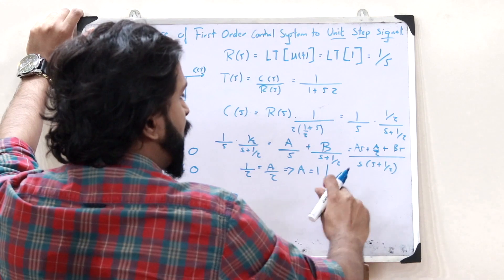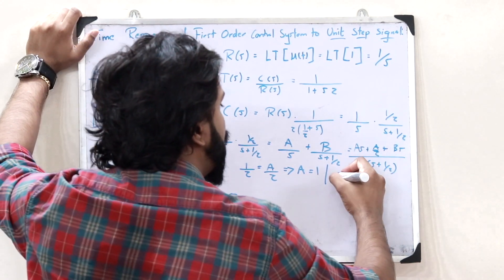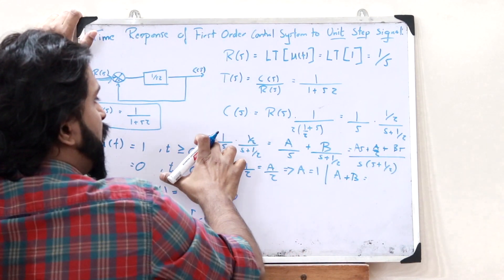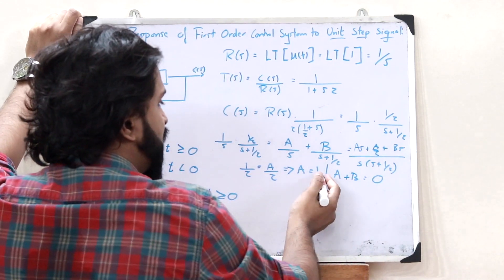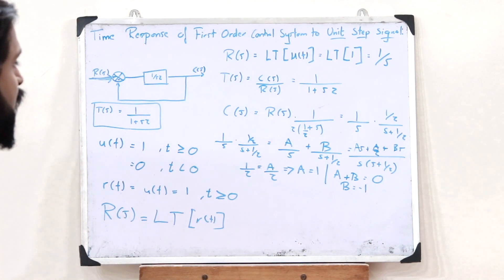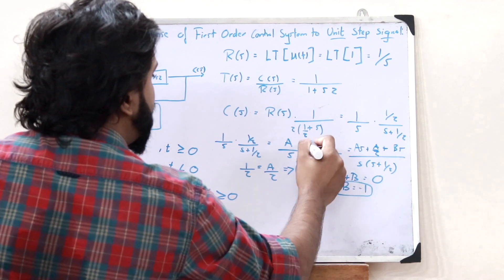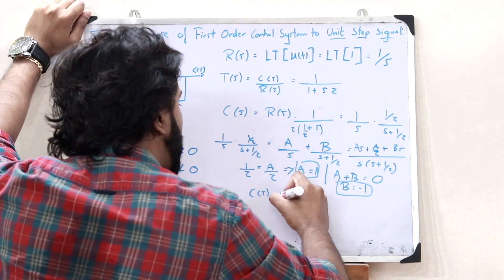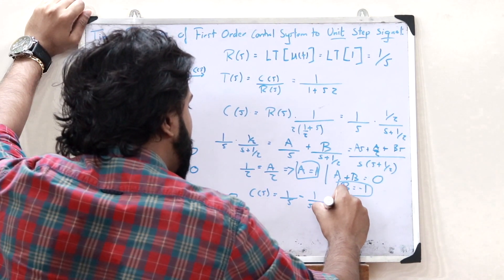Equating the coefficients of s, we get A + B = 0. Since A = 1, we get B = −1. Substituting the values of A and B, we obtain c(s) = 1/s − 1/(s + 1/τ).